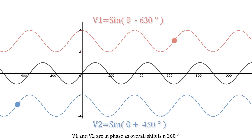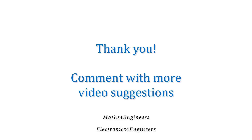Again, with V1 and V2, the overall phase shift is 1080 degrees, which is a multiple of 360 — it's three whole waveforms, so they are in phase with each other. Thanks for watching. I hope it was useful, and please comment with more video suggestions.